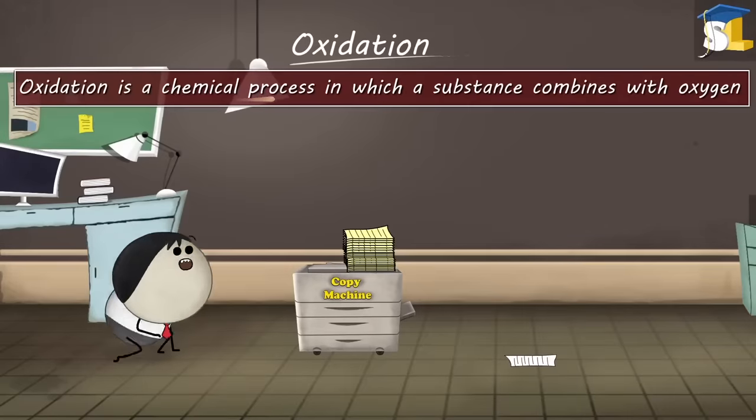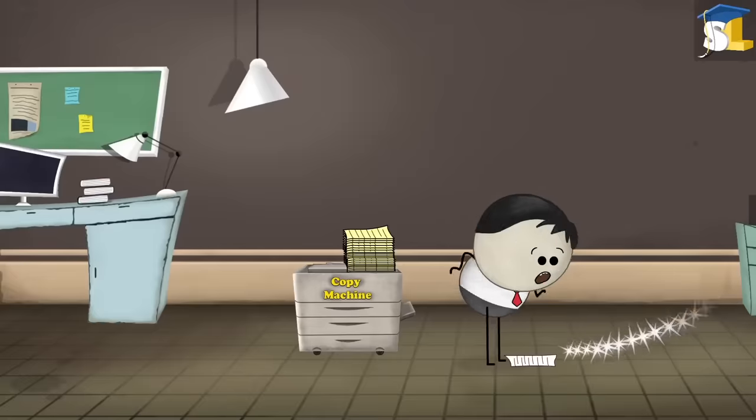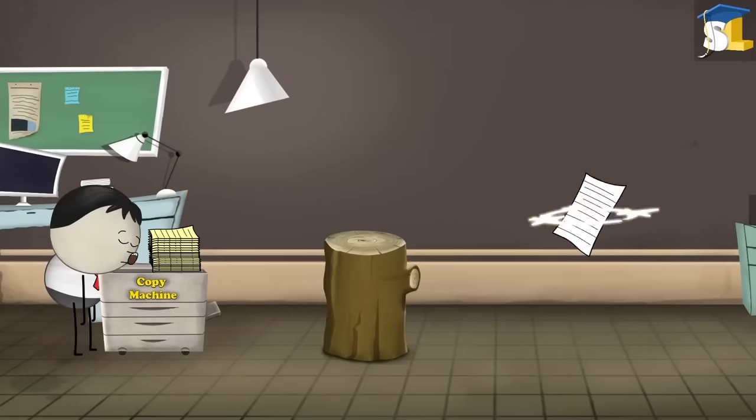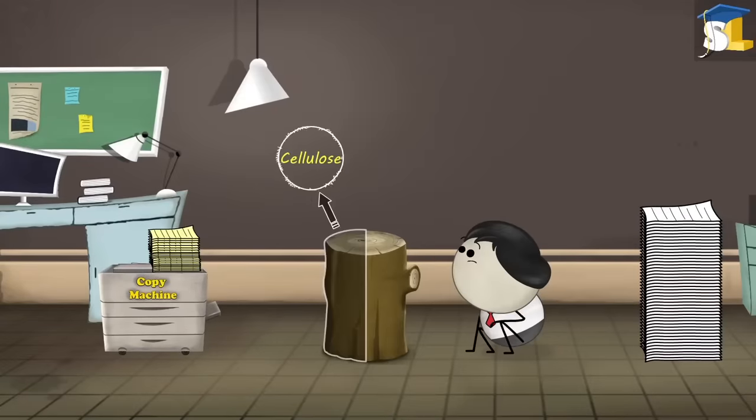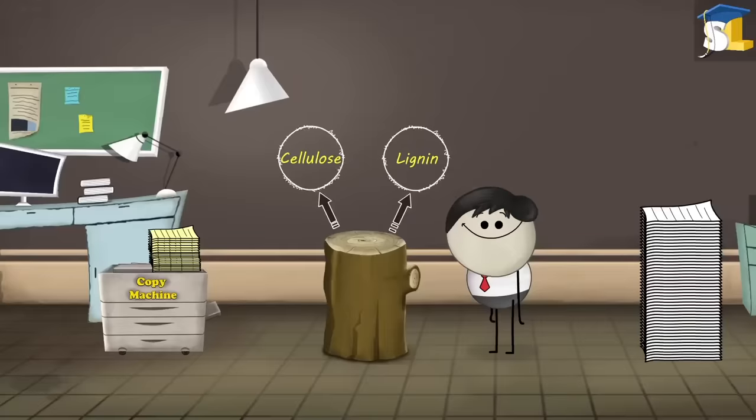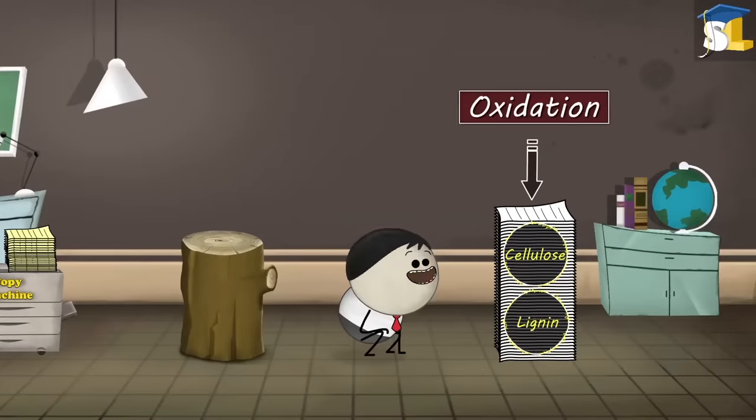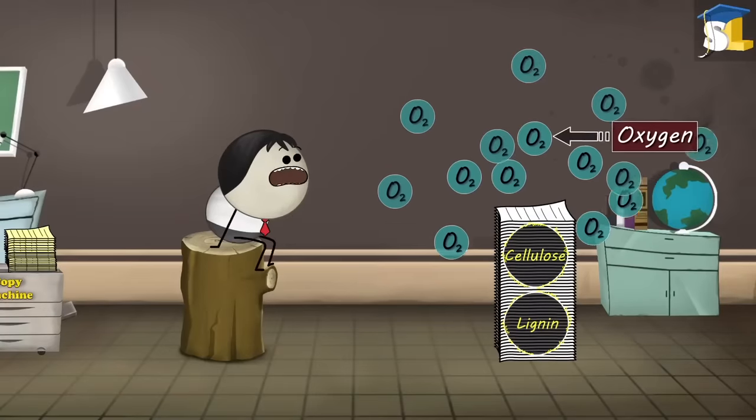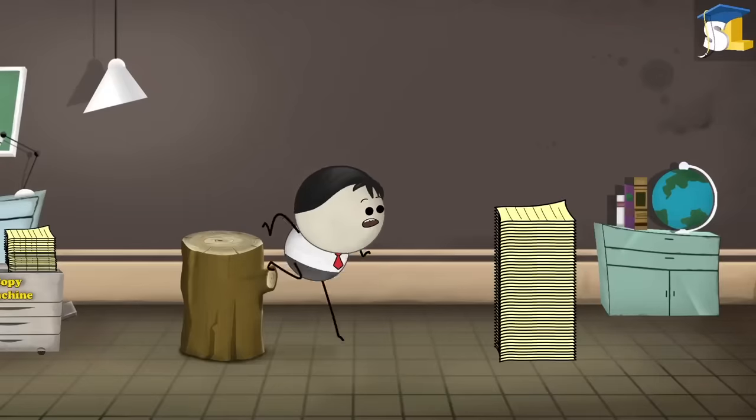Oxidation is a chemical process in which a substance combines with oxygen. Now, paper is primarily made up of wood. Wood is made up of cellulose and lignin. Now, these two components which are present in paper are susceptible to oxidation. That is, when they are exposed to air, they are likely to combine with oxygen, causing the color of paper to change from white to yellow.